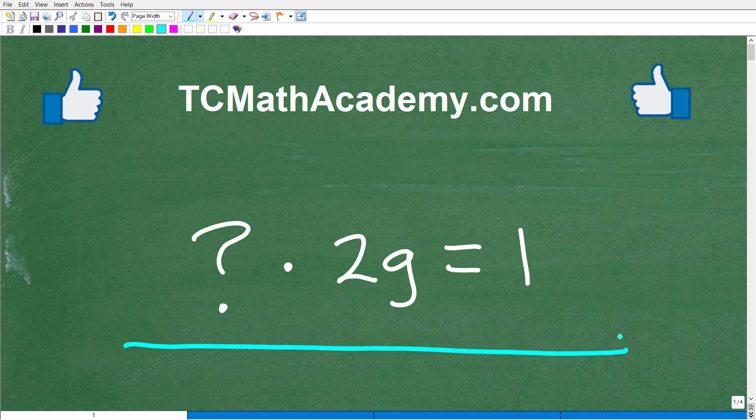But don't get discouraged because this is not that difficult. But this problem right here really represents a very important concept in mathematics. So let's take a look at the question. The question is the following: What times 2g is equal to 1? Another way to look at this problem is the product of 2g and something else is equal to 1. We're looking for what this is equal to.